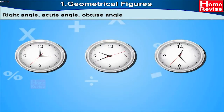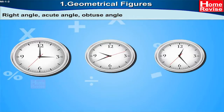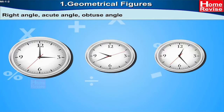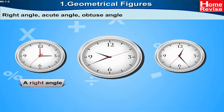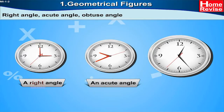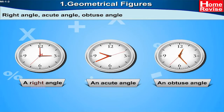Here are some pictures of clocks. In the first picture, the hour hand and the minute hand are showing a right angle. In the second picture, the hour hand and the minute hand are showing an acute angle. In the third picture, the hour hand and the minute hand are showing an obtuse angle.